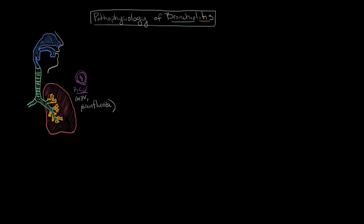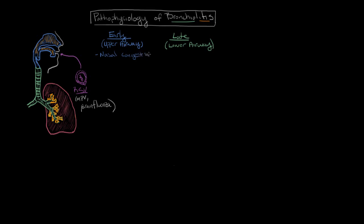Bronchiolitis really has two pathologic stages. It has the early stage, which affects the upper airway, and it has a later stage that affects the lower airway. In the early stage of bronchiolitis, RSV is taken up by the upper airway here in blue, and it causes infection of the epithelium — the cells that line this cavity — and it subsequently develops inflammation. It's this inflammation of the upper airway that's responsible for the early signs and symptoms of bronchiolitis, which are things like nasal congestion and a runny nose.